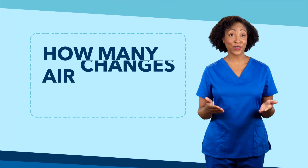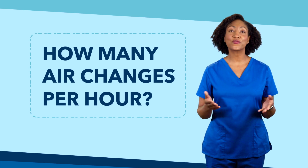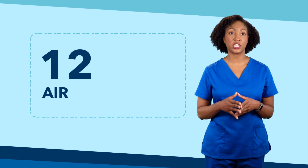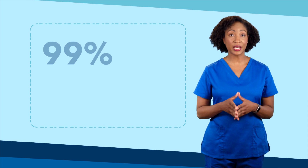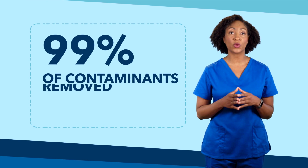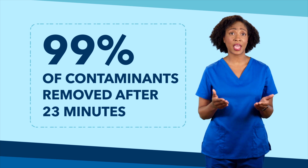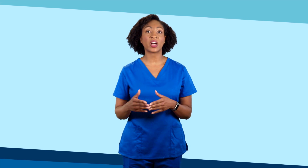So how many air changes per hour are used for each patient room? For AIIRs, the building codes require a minimum of 12 air changes per hour, which means based on the CDC table, 99% of the contaminants are removed from the room after 23 minutes. But most patient rooms aren't AIIRs and don't have 12 air changes per hour. So facilities teams provide guidance to clinical staff based on the room type and number of air changes for that room.